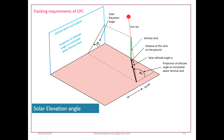We can resolve or project this shadow on both horizontal and vertical planes. Since the shadow falls on the horizontal plane, the angle made by the shadow with an arbitrary reference direction — say, the south direction — is called alpha-h, which is the projection of altitude angle on the horizontal plane.